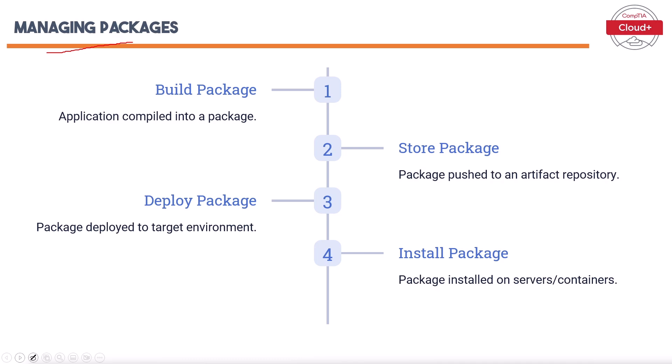Managing packages involves building, storing, deploying, and installing them in a target environment. The key steps are: Build Package — the application is compiled into a distributable package. Store Package — the package is pushed to an artifact repository, ensuring it is versioned and accessible. Deploy Package — the package is deployed to the target environment. Install Package — the package is installed on servers or containers, ensuring the application is correctly set up and ready to run.